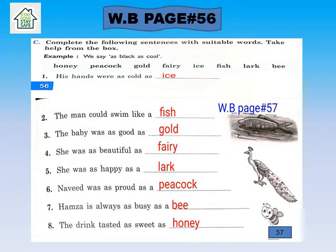Now class, we are going to do workbook page number 56. Please take out your workbook and open page number 56. The question is: complete the following sentences with suitable words — take help from the box. For example: 'as black as coal'. We select the correct word from the word bank. The words in the word bank are: honey, peacock, gold, fairy, ice, fish, lark, bee.